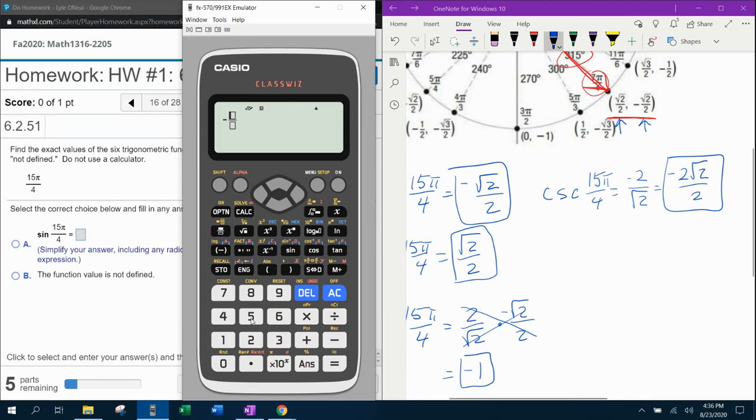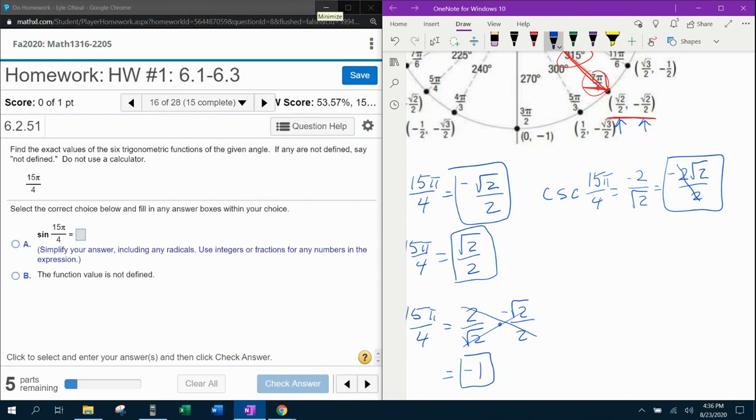If we flip that over, if we do negative 2 over square root of 2, I want you to notice that my calculator rationalizes that for you. Look at that, and I forgot to simplify it. So the calculator is going to check and make sure that I reduce to lowest terms also. Nice to use the calculator and check.